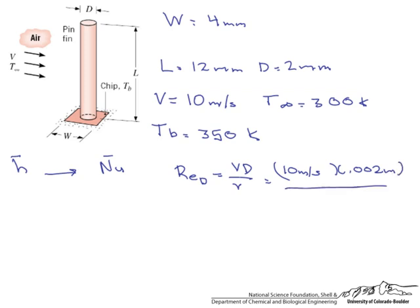When we look up the viscosity for air at an average of 325 K we come out with 18.41 times 10 to the minus 6 meters squared per second. So our Reynolds number is going to be 1087.